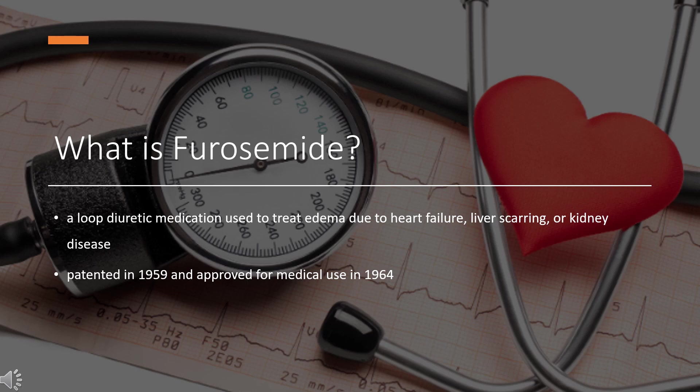Furosemide is a loop diuretic medication used to treat edema due to heart failure, liver scarring, or kidney disease. It has many trade names including Discoid, Fursmide, Lasix, and Euromide. Furosemide may also be used for the treatment of high blood pressure. It may be taken intravenously or orally. Furosemide was patented in 1959 and approved for medical use in 1964.